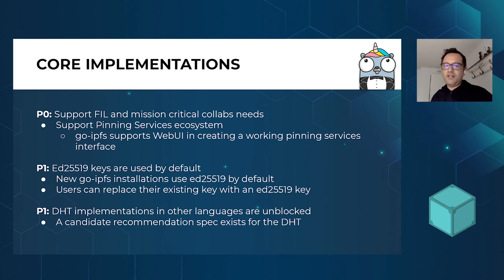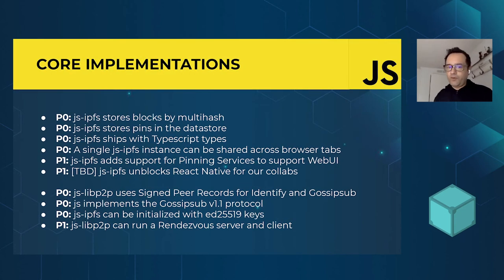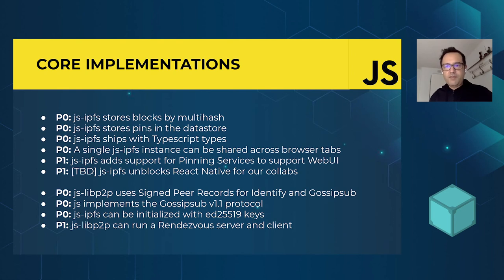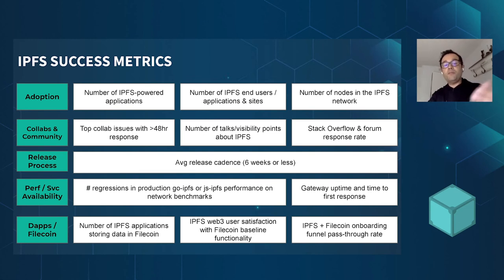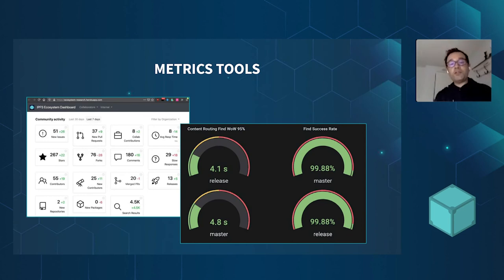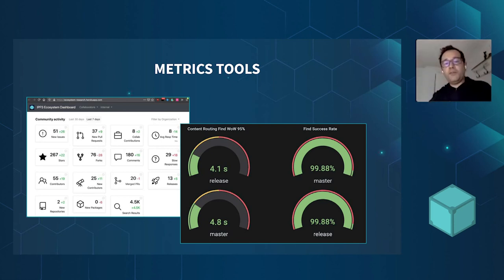On the core, a high priority is a specification for the DHT so that DHT implementations can be built in multiple languages instead of just Go. In JavaScript, there are a bunch of performance improvements coming, as well as integrations with React Native and TypeScript. We want to provide libraries that work how JavaScript developers are working today and make sure IPFS is a choice they can make when building their applications. We're also using custom dashboards to understand the full scope and spectrum of the project.